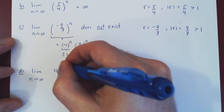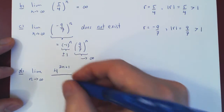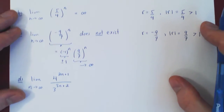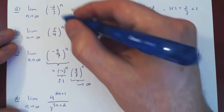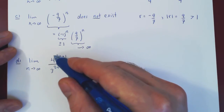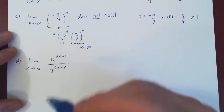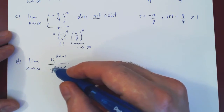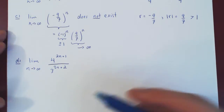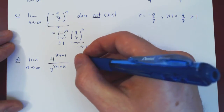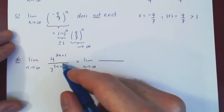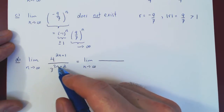Let's look at two more examples. Consider 4 to the 2n plus 1 over 3 to the 3n plus 2. This looks a little different. In our previous examples we had the nth power of a fixed real number, but here we have 4 to the power 2n plus 1 and 3 to the power 3n plus 2. So is this a geometric sequence? Let's see — we'll split up the constant and variable parts of each exponent.